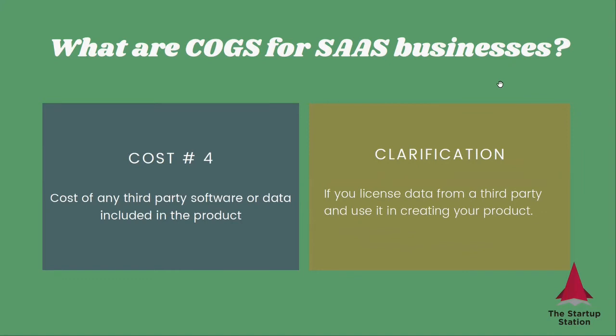Cost number four: cost of any third-party software or data included in the product. So if you are using any other solutions, white-label solutions, in order to make your product better, you need to include that here. The rationale is that it is used in servicing your existing customers. The question to determine if a cost is variable or not: ask, is this person or tool important for servicing my existing customers — not to convert new customers, but to service specifically existing customers? And let's not confuse it with a cost like rent, because rent is incurred regardless of whether or not you have any revenue. These costs will only be incurred with each customer — that's what makes them variable.